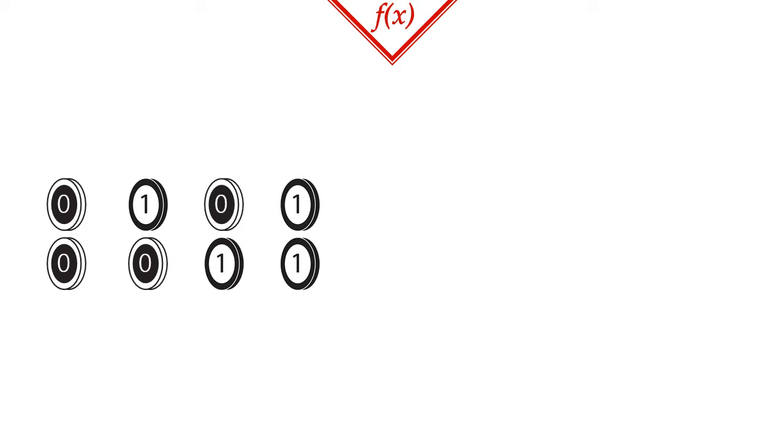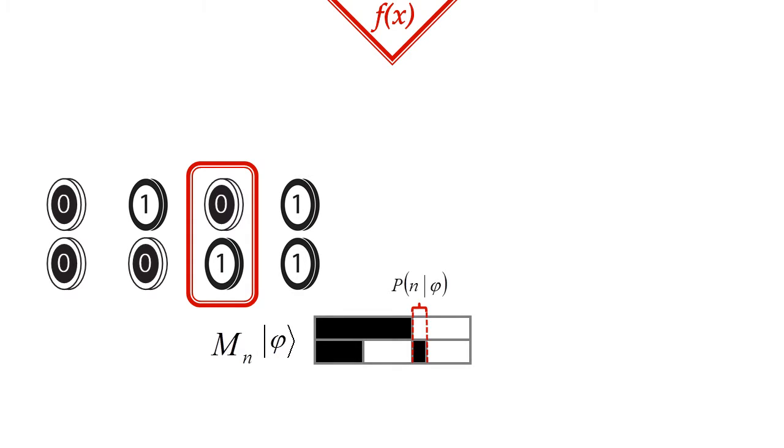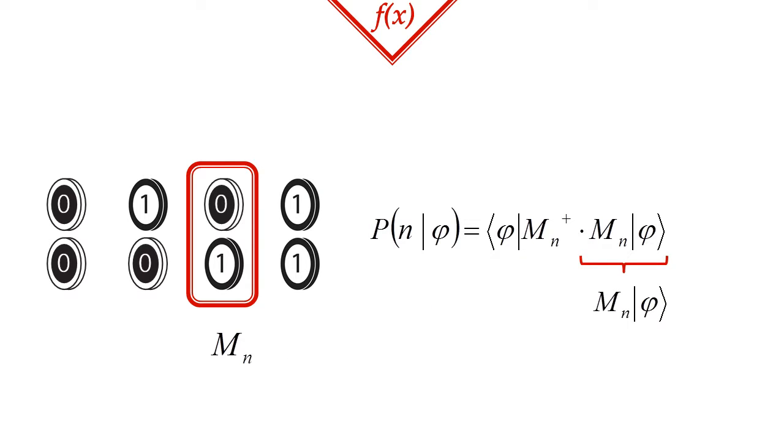Let the matrix M_n be associated with the nth outcome of the measurement. If we measure an arbitrary state |φ⟩, the probability of us finding the system in the nth state can be calculated using the following equation. Notice that the M_n |φ⟩ vector and its conjugate transpose both appear in this expression. Therefore this is an inner product of that vector by itself, and thus the absolute value square of that vector.